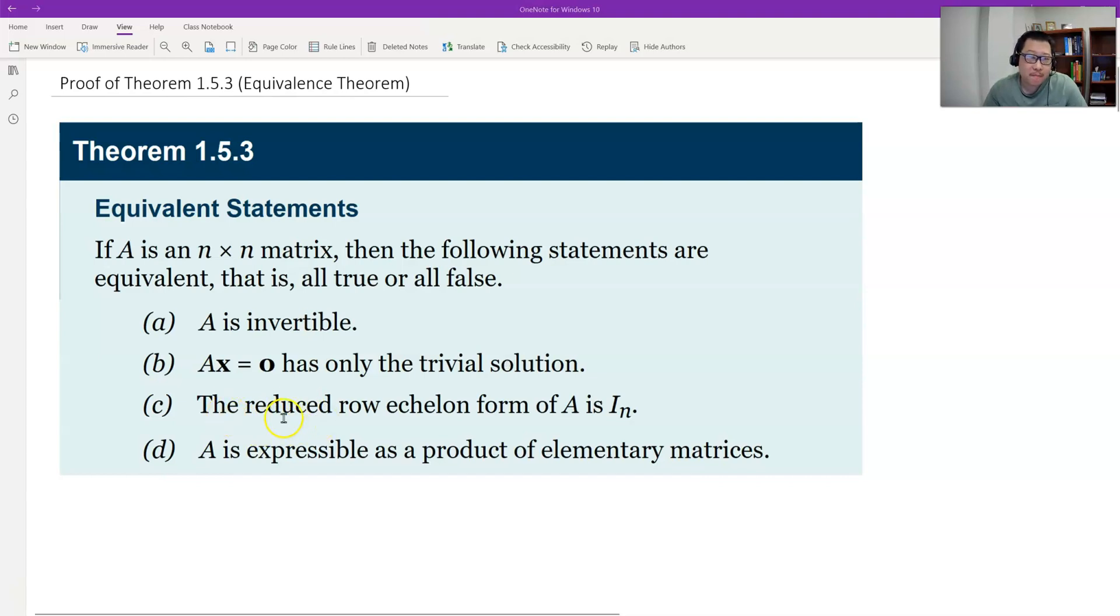So what is C? C is the reduced row echelon form of A is identity. D is A is expressible as a product of elementary matrices. If A is invertible, then A can be written down as a product of elementary matrices.